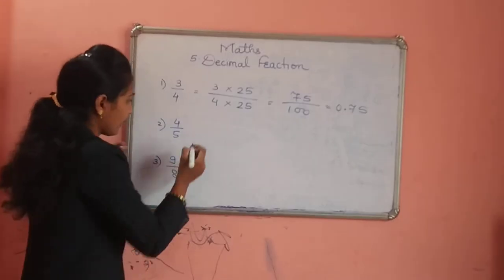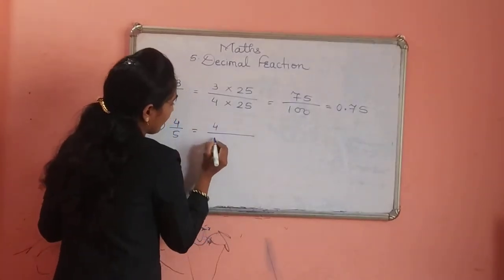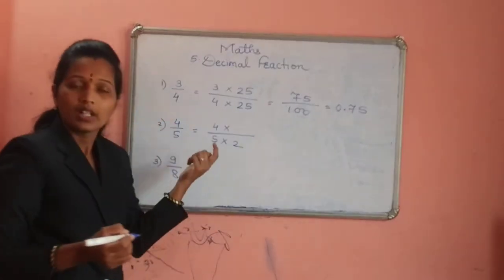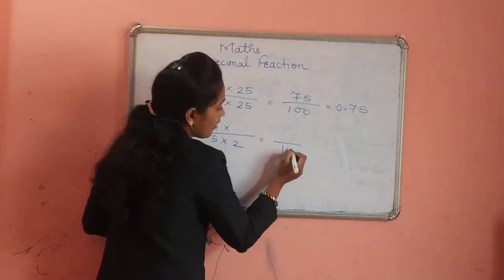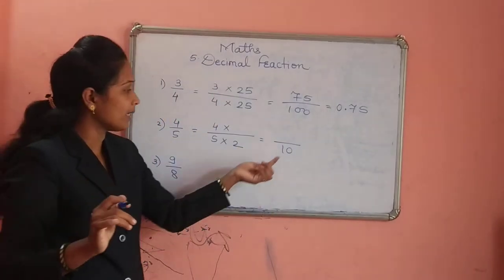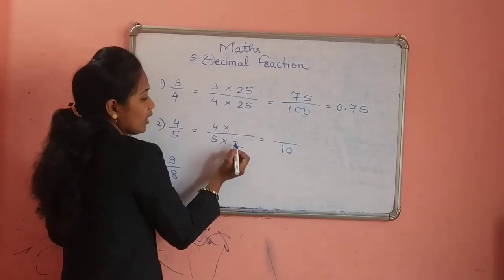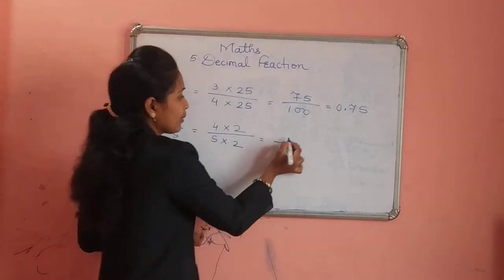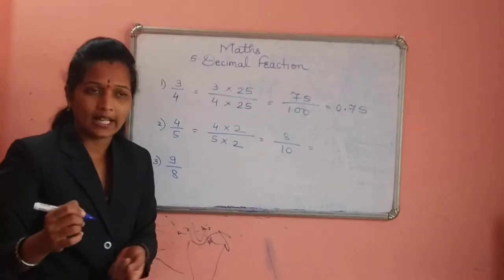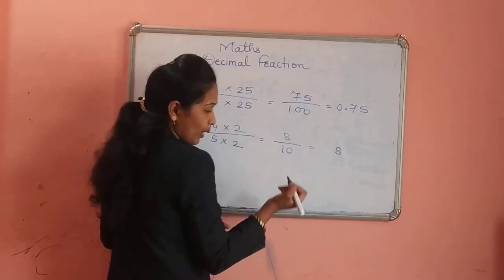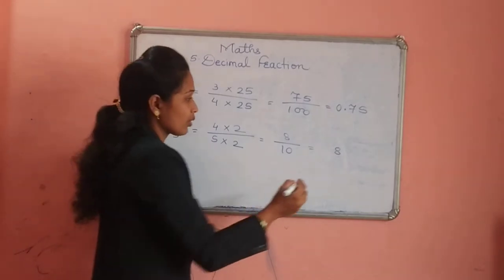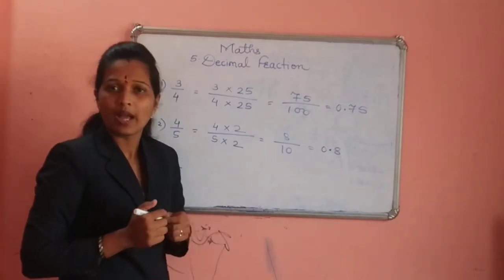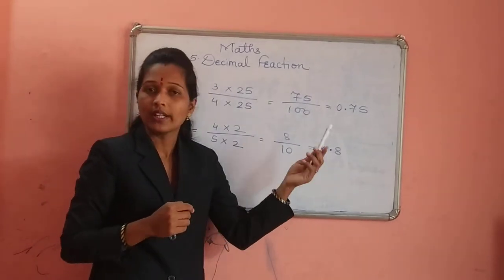By the same way, for 4 divided by 5: we can multiply by 2, and 5 times 2 is 10. Always remember, we want the denominator to be 10, 100, 1000 and so on. So we multiply the denominator by 2, and the numerator also by 2: 4 times 2 is 8, giving 8 divided by 10. In front of 1 there is one zero, so remove 1 digit and give the decimal point. No number is in front of the decimal point, so we write 0: our answer is 0.8.